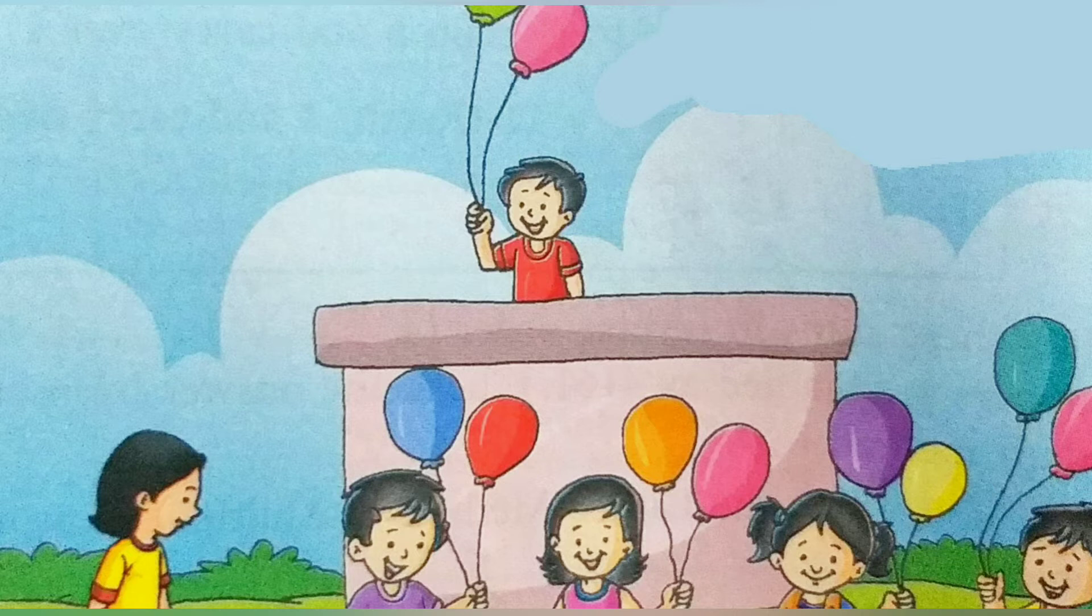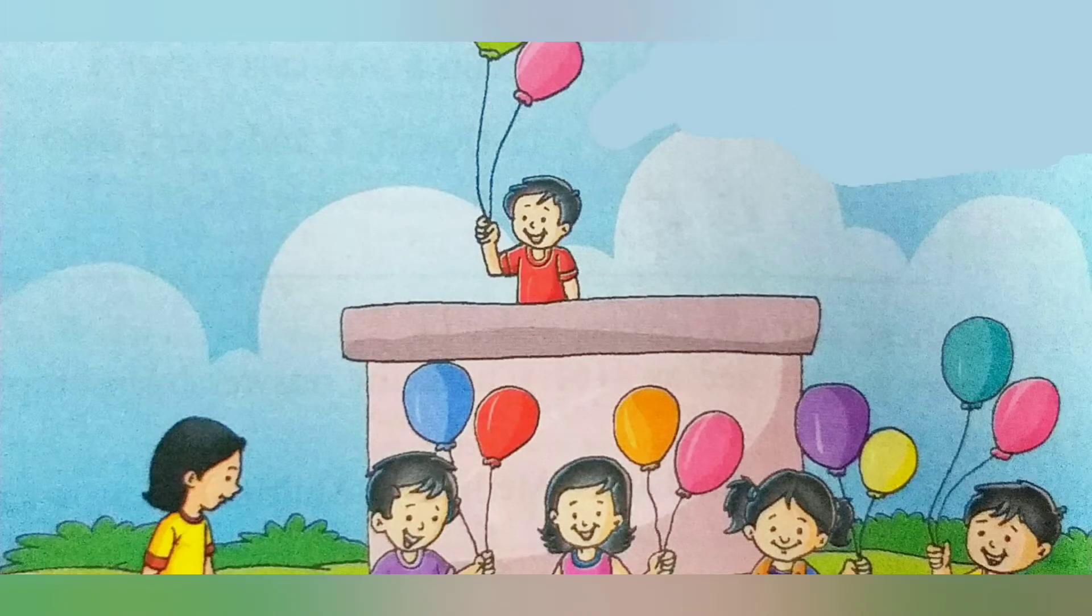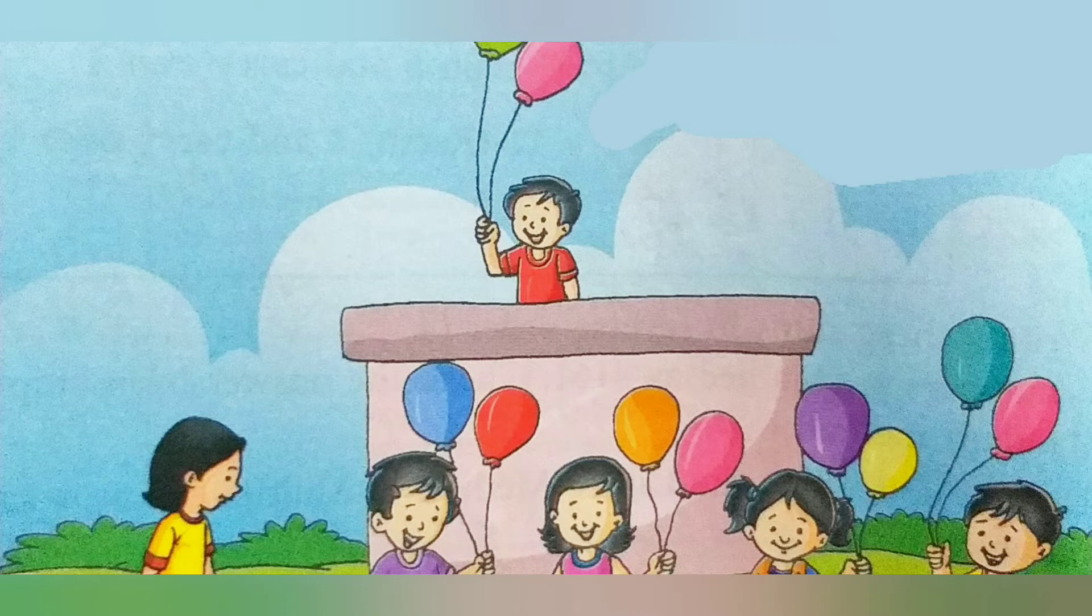In this, Sita has 10 balloons. She wants to give an equal number of balloons to each of these five children. She starts by giving one balloon to each child and then finds in the end that she could give two balloons and no balloons would be left. So 10 balloons are shared equally by five children. How many balloons each child got?